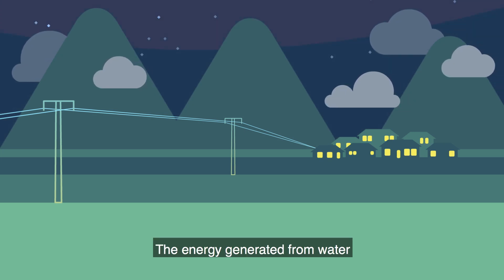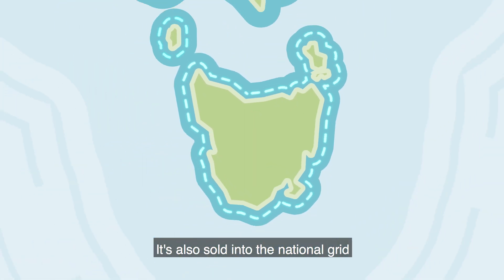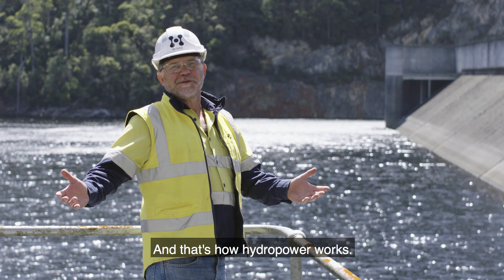The energy generated from water helps power Tasmanian households and businesses. It's also sold into the national grid, supporting Australia's transition to a renewable energy future. And that's how hydropower works.